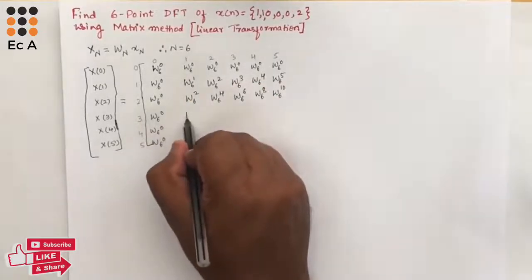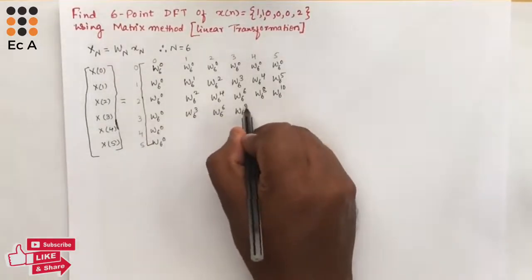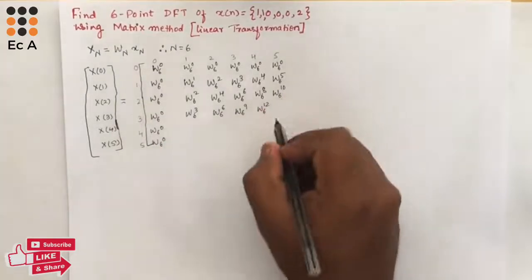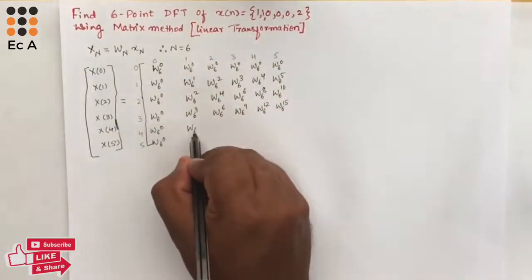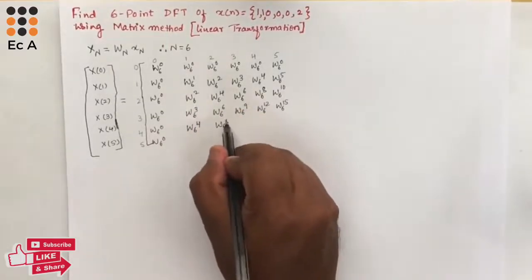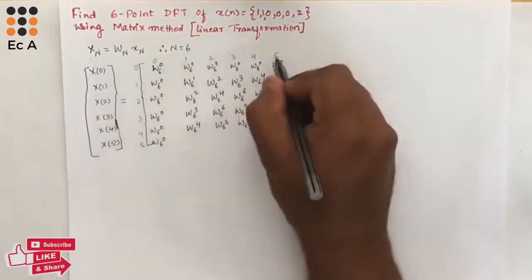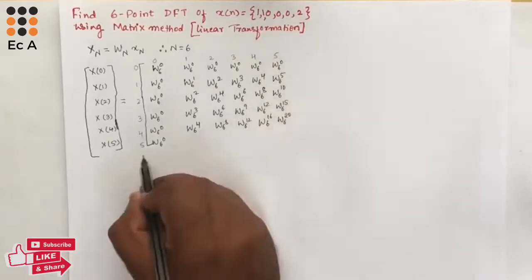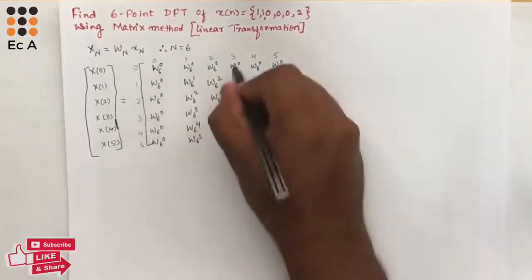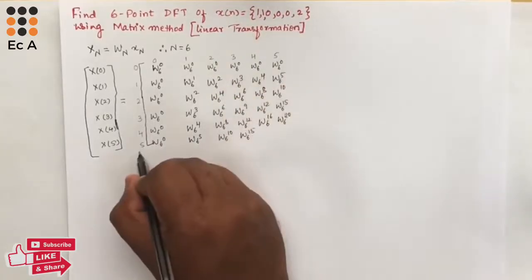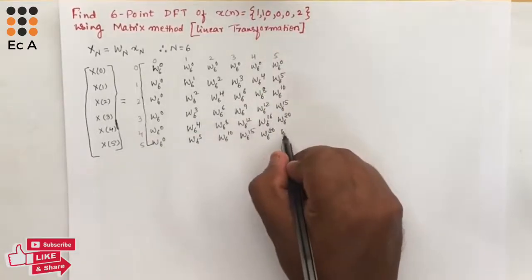For row k=3: 3×1=3, W6^3; 3×2=6, W6^6; 3×3=9, W6^9; 3×4=12, W6^12; 3×5=15, W6^15. For row k=4: 4×1=4, W6^4; 4×2=8, W6^8; 4×3=12, W6^12; 4×4=16, W6^16; 4×5=20, W6^20. For row k=5: 5×1=5, W6^5; 5×2=10, W6^10; 5×3=15, W6^15; 5×4=20, W6^20; 5×5=25, W6^25.